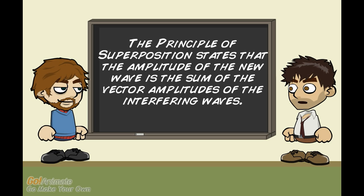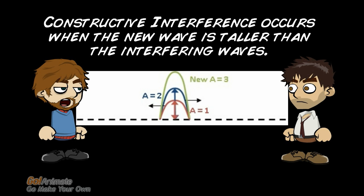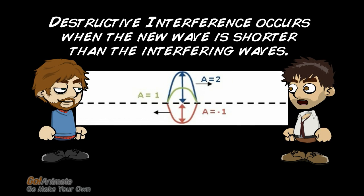Any time that waves interfere we can use the principle of superposition to find the amplitude of the new wave formed. When the principle of superposition gives us a new amplitude that is larger than what we started with, we call the situation constructive interference. But when the interfering amplitudes combine to make a shorter wave, we call it destructive interference.